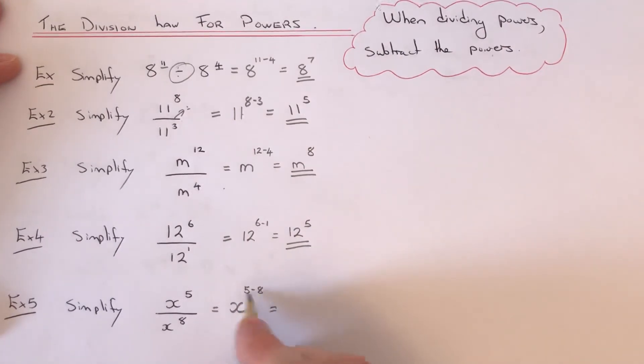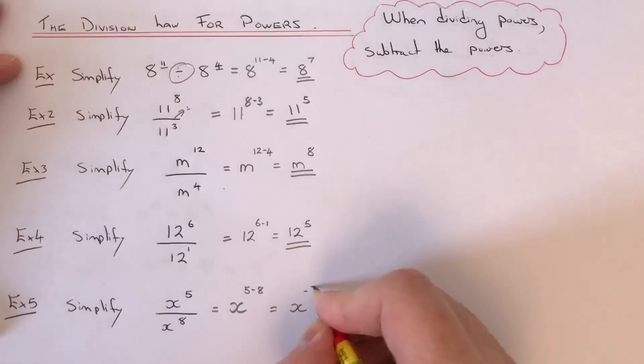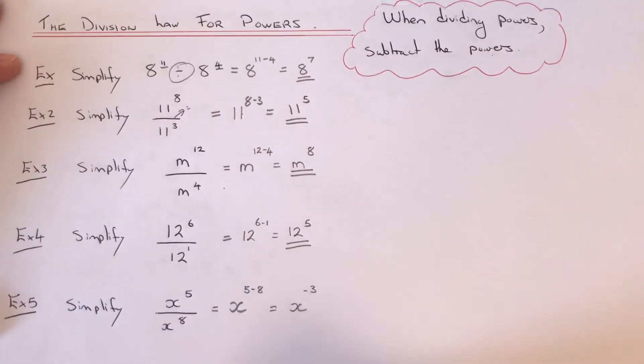Whatever you do, don't change the order around. Keep it in that order. Don't do 8 take away 5. So 5 take away 8 will give us negative 3. It's fine having a negative power.